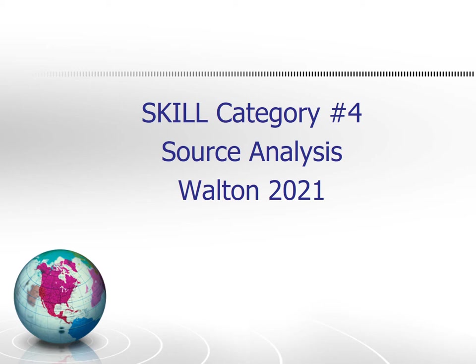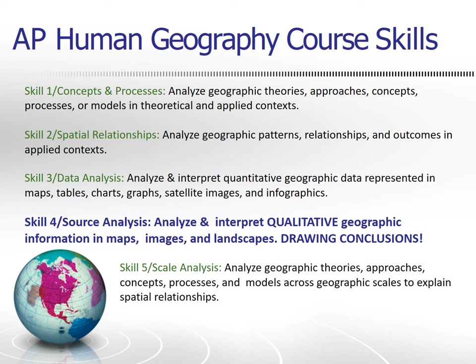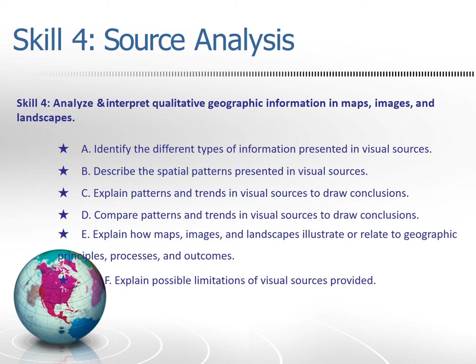Here's skill four, source analysis: analyze and interpret qualitative geographic information — maps, images, and landscapes. This is where your students are going to have to draw conclusions from what they're looking at, and they will clearly see this as part of AP Human Geography FRQ exam prompts. Skill four specifically asks students to look at six different tasks.